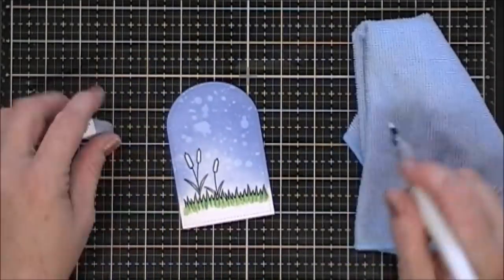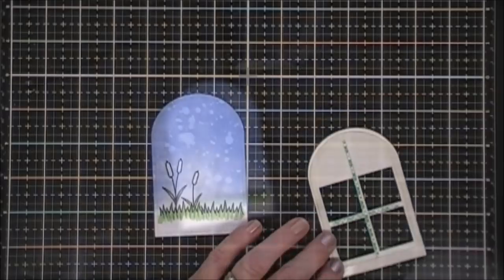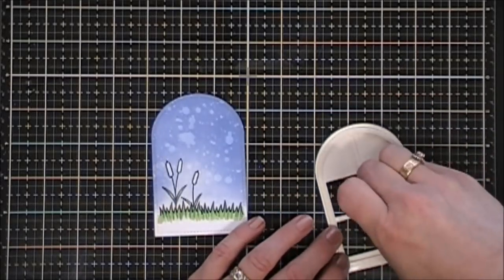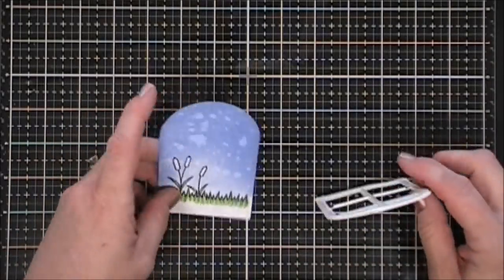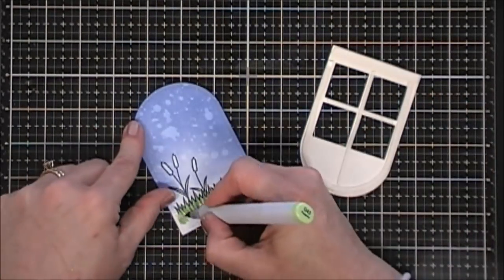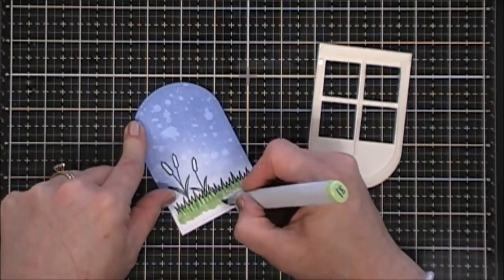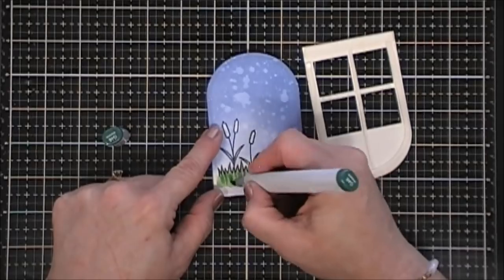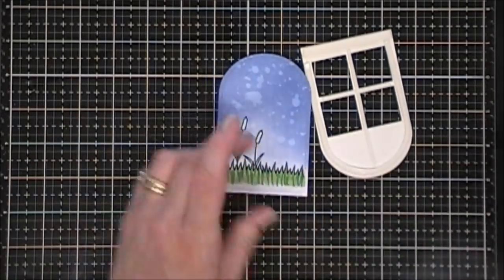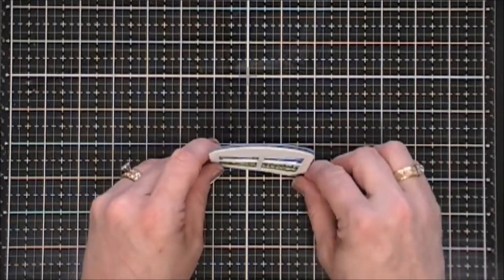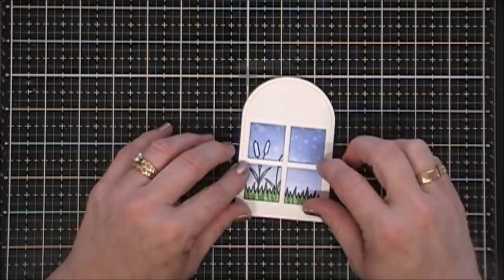Wink of Stella did great with that. They'll be white with some shimmer to them. Now I'm going to remove the backing off of my foam tape. You can see a little bit of the white underneath the grass, so I'm just going to take my Copic markers and fill that white area in so it doesn't show white. I'm going to place my window frame right on top of my background.